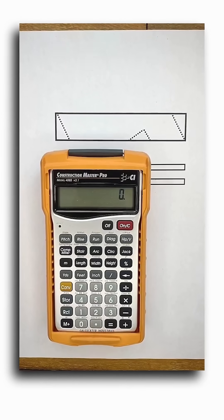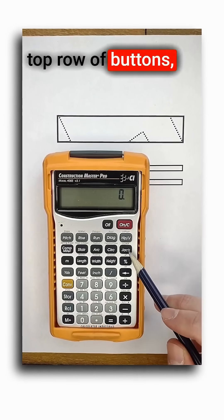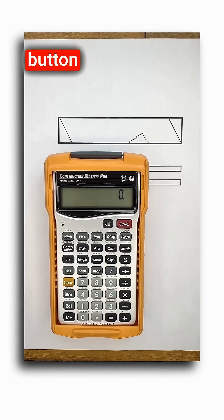Everything you need to frame a roof is located across the top row of buttons as well as the one jack button down the side.